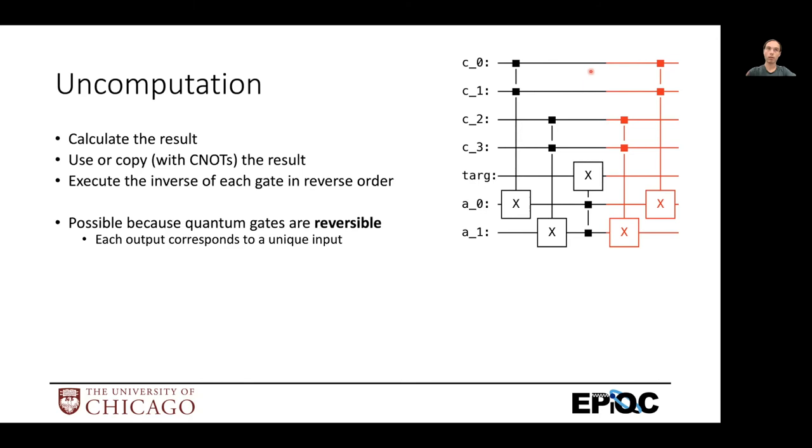So basically what uncomputation is, is you first on the left, you calculate a result and you use it. So here it's technically intermediate values on these Ancilla, then it's using it. But now to, we have to undo the calculations that created the values on these Ancilla.